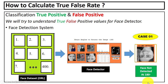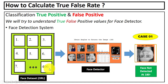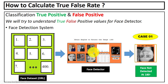Now we will understand how we can compute the true and false positive values. We have four cases. First case: we have a face dataset containing 400 digital images and we randomly selected any digital image from this face dataset. We entered the rotation angle as 180 degrees — you can see the face is detected. This is the first case: face is detected.